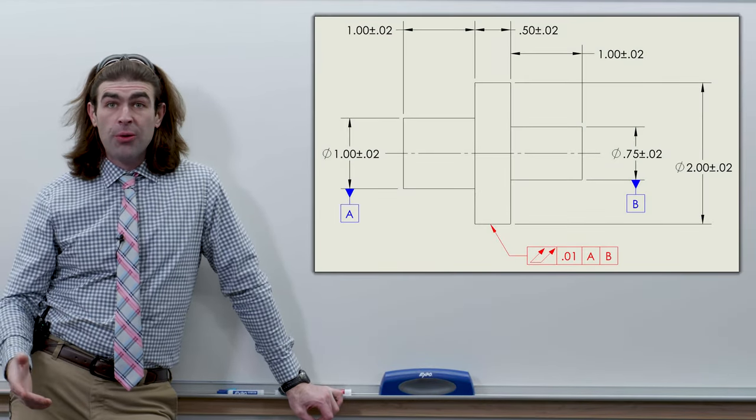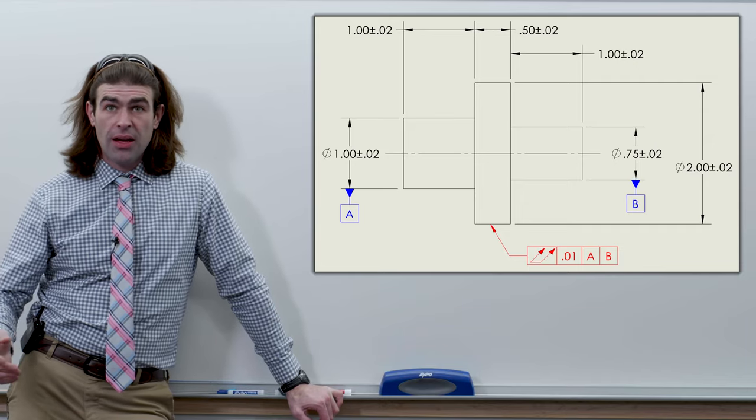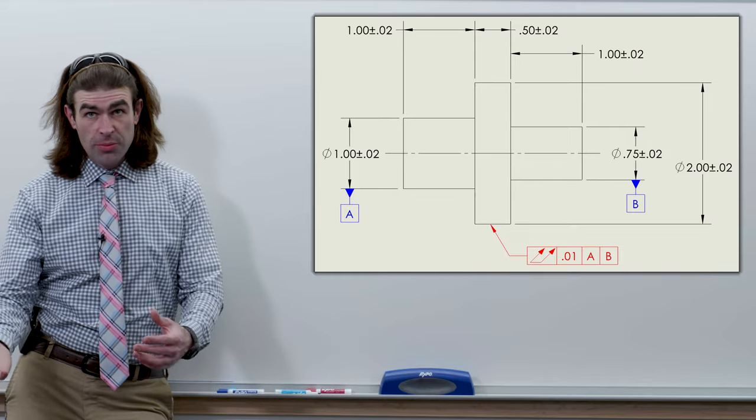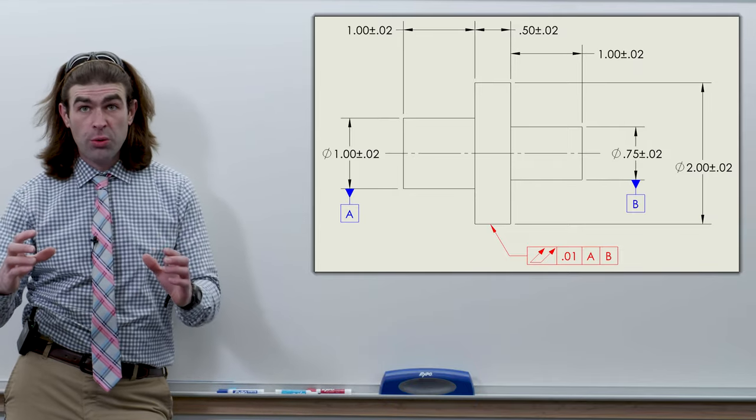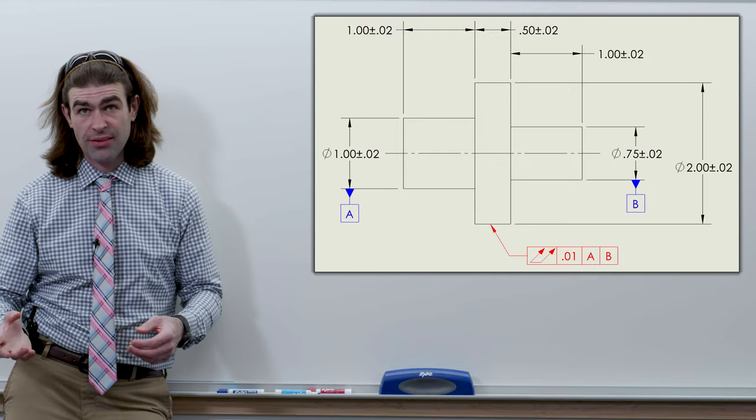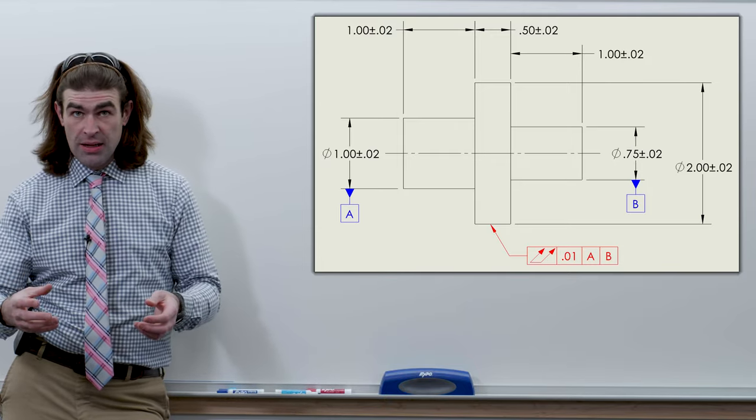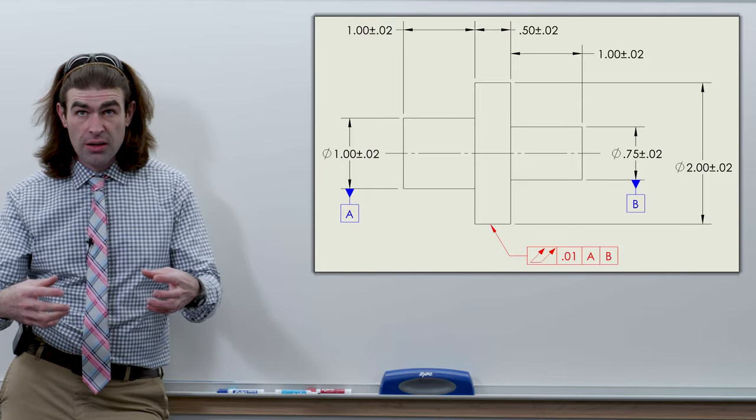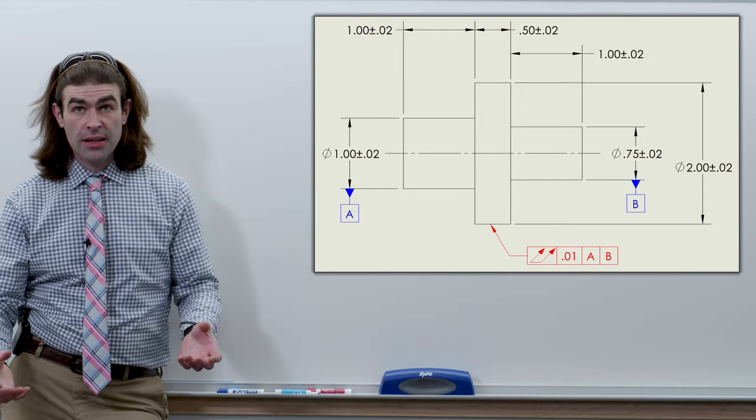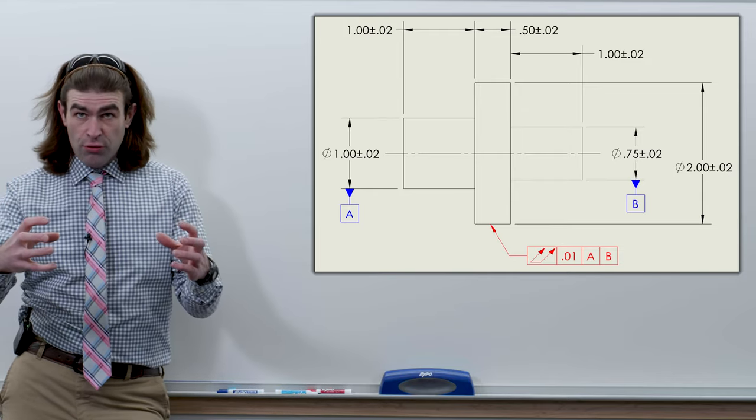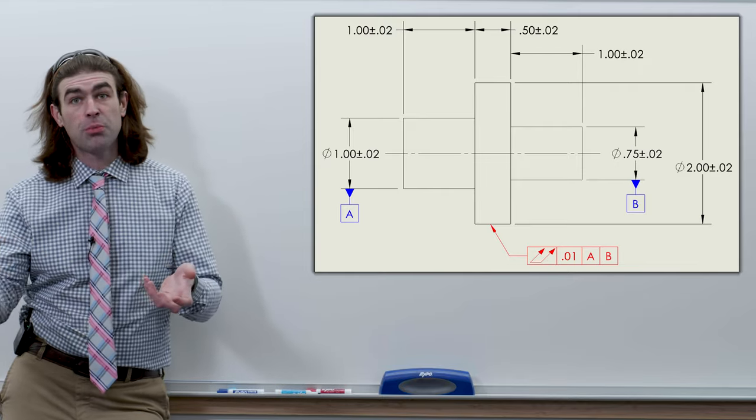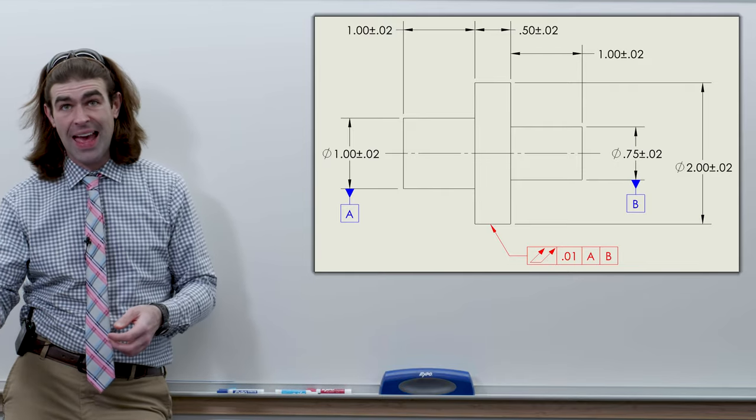It's a compound or a multiple datum feature. ASME keeps giving it different names. Essentially, like I talked about before, it's when you have two diameters that form a single axis. So if you know your part is mating between two bearings, you want to inspect it as such. So the idea is you grab it with two V-blocks or collets, however you're going to do it, and when you spin it, it'll be spinning on a single axis.